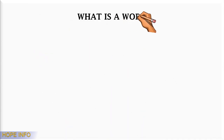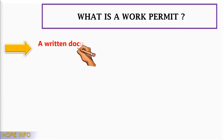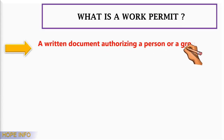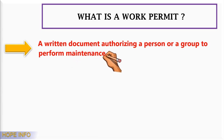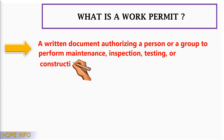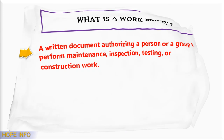What is a work permit? A work permit is a written document that authorizes a person or a group to perform maintenance, inspection, testing, or construction work.